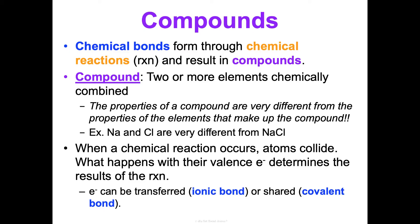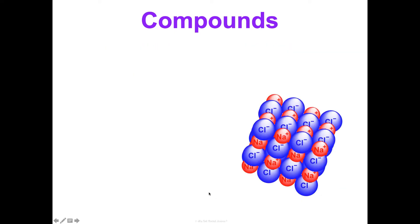When a chemical reaction occurs, atoms are colliding, and what happens with their valence electrons during that collision determines what forms. Typically, electrons are either transferred in the formation of an ionic bond, or shared in the formation of a covalent bond. Ionic bonds make ionic compounds; covalent bonds make covalent compounds. We'll cover ionic bonds in Concept 2 and covalent bonds in Concept 4 of this unit.